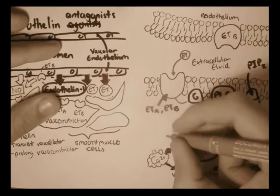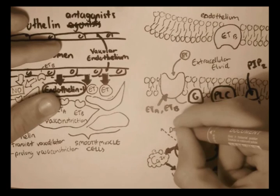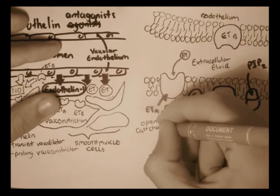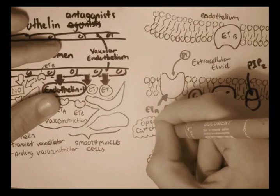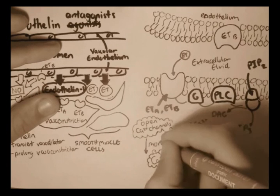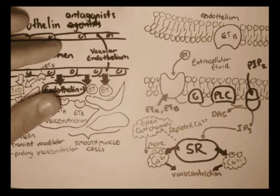And if the sarcoplasmic reticulum is depleted with calcium ions, it stimulates the calcium channels on the membrane, opens it up, so an influx of calcium ions can go in, again, making vasoconstriction increasing blood pressure.